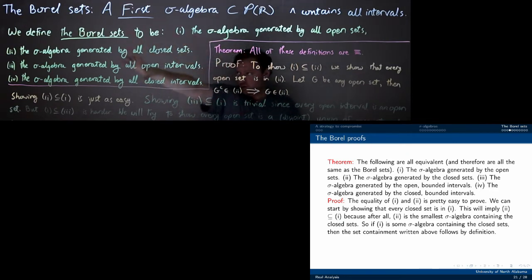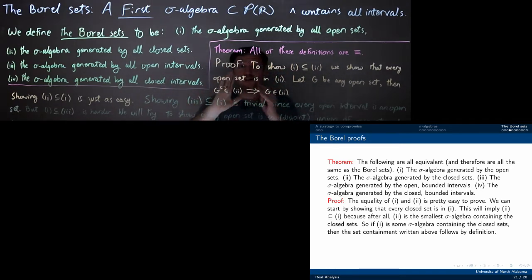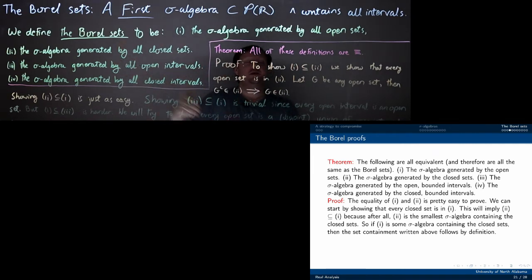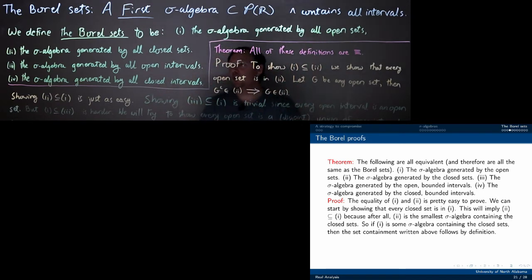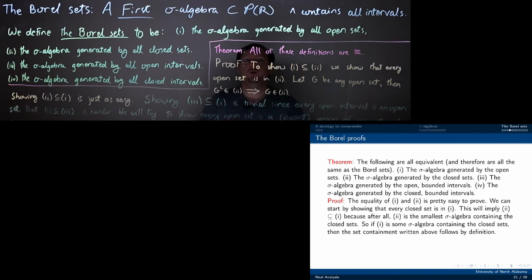There are also other equivalent definitions — not the only ones. We could take half-open intervals, or rays: intervals that start at a point and go off to infinity. If we generated only using the rays, we would still get the Borel sets. We could also use intervals that have rational numbers as their endpoints — those also generate the Borel sets. So although I'm giving four equivalent definitions of the Borel sets, there are many more as well. We won't need them for a little while. Let's go ahead and prove this theorem that all of these definitions are equivalent.